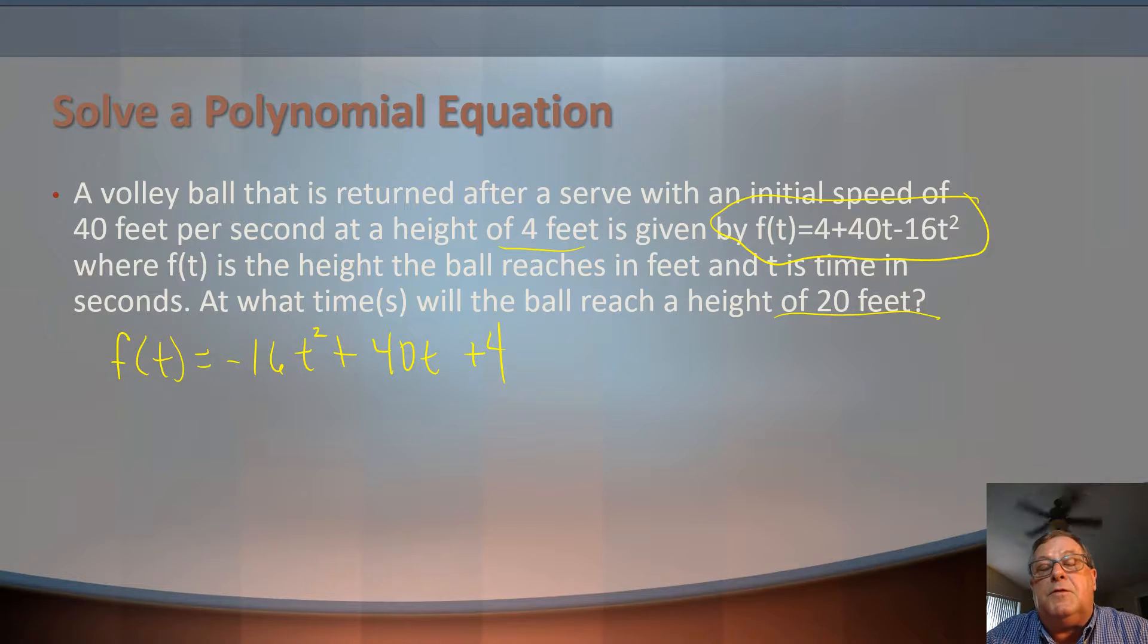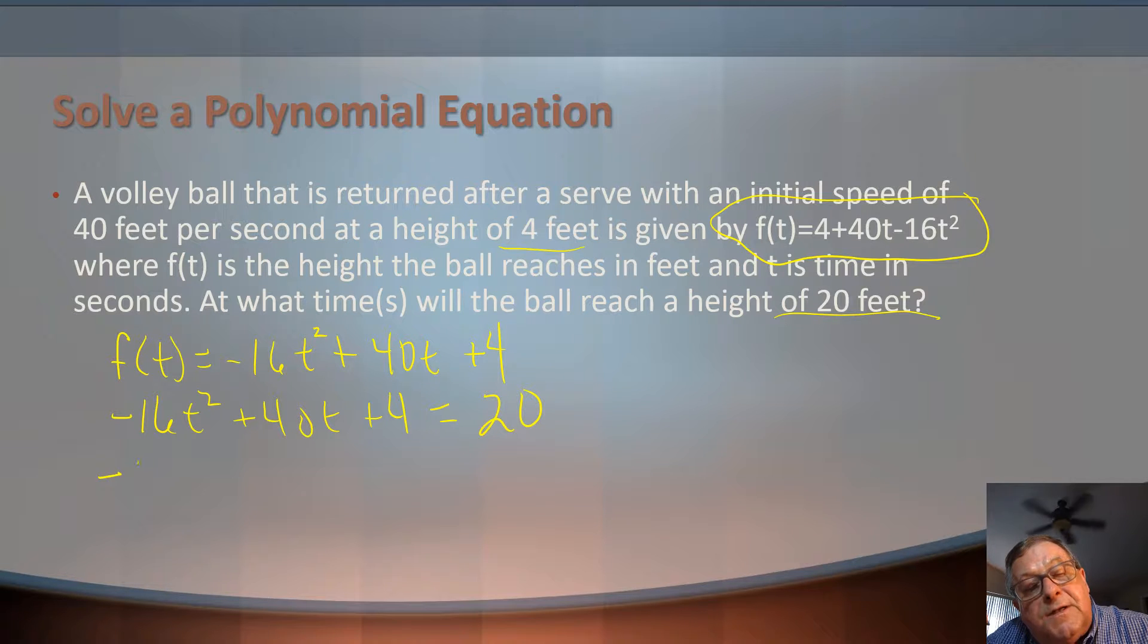And the 4 feet is modeled there in the equation. I could graph this equation and see when t equals 16, but I think what I'm going to do is set this equation equal to 0. So I'd have -16t² + 40t + 4 = 20 when it gets 20 feet. I'm going to subtract 20 from both sides so this equation equals 0. So I've got -16t² + 40t - 16 = 0.